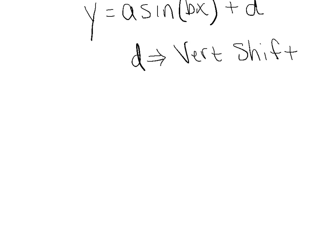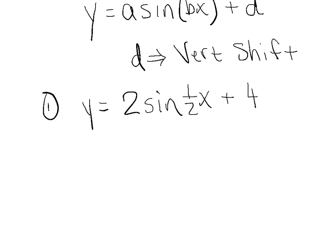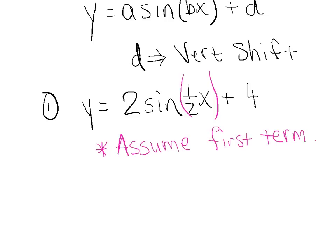Let's look at example one: y equals 2 times the sine of 1 half x plus 4. First, what are we taking the sine of? There is an invisible set of parentheses, and without visible parentheses, we assume we are taking the sine of the first term only — that's an unwritten math rule. So we have an amplitude of 2, a frequency of 1 half, and most importantly today, a vertical shift of up 4 units. What does this look like if we graph it over the domain of 0 to 2 pi?